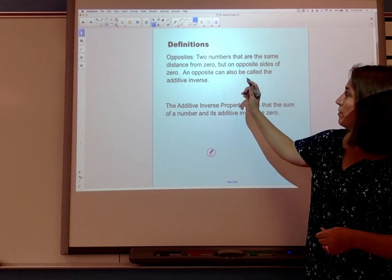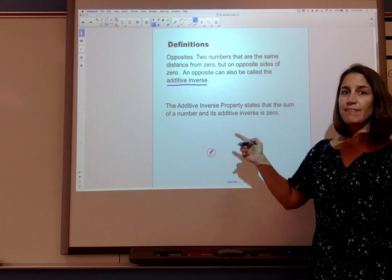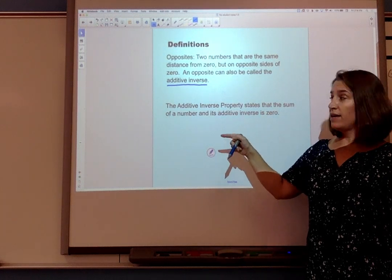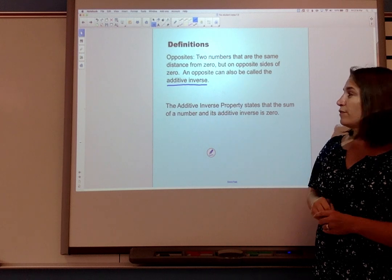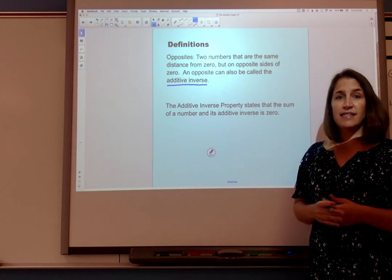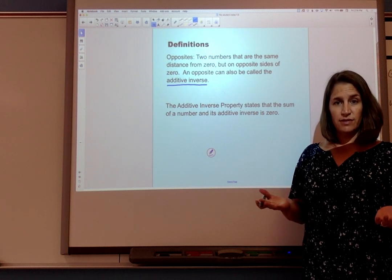Another term that's sometimes used to describe opposites is additive inverse. Let's talk about why that is. Our second vocabulary term is the additive inverse property. That states that the sum of a number and its additive inverse is 0.